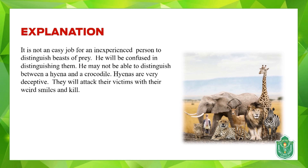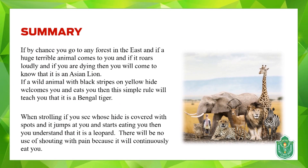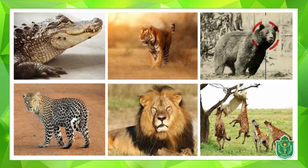If we summarize, she says: if by chance you go to any forest in the east and a huge, terrible animal comes towards you and you don't know what kind it is — if it comes towards you, roars loudly, and you find yourself terribly shaken and frightened — then you should know it is an Asian lion.